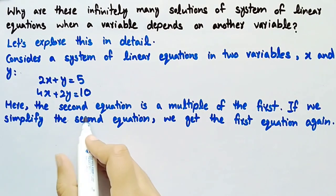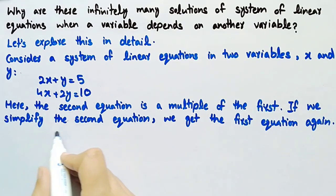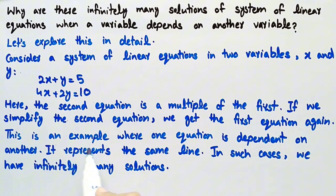Here, the second equation is a multiple of the first. If we simplify the second equation, we get the first equation again. This is an example where one equation is dependent on another. It represents the same line. In such cases, we have infinitely many solutions.